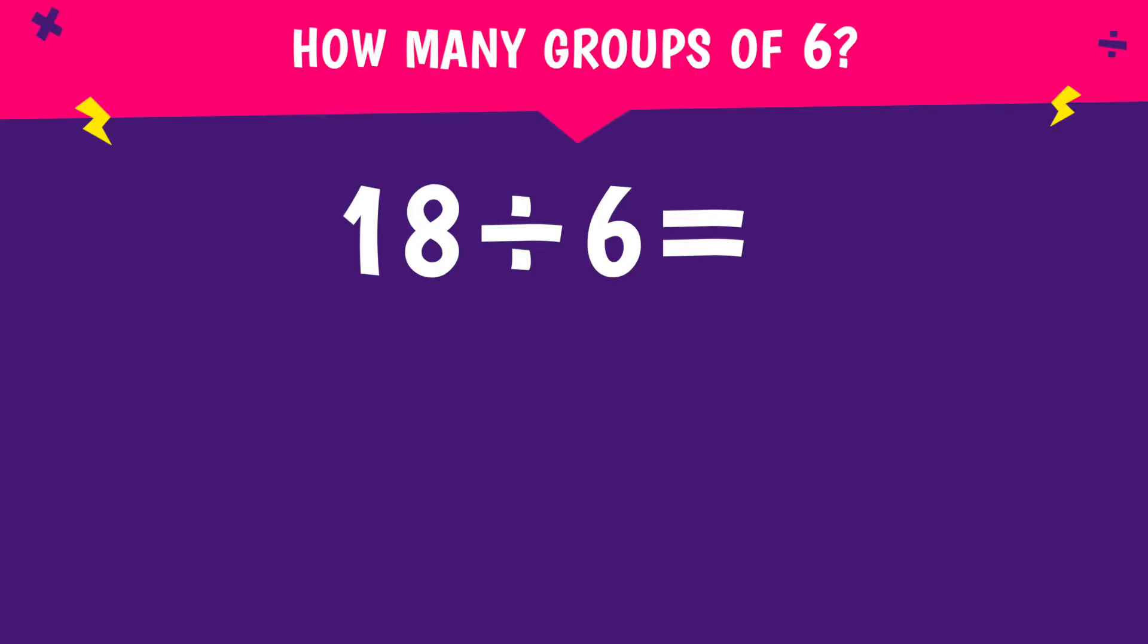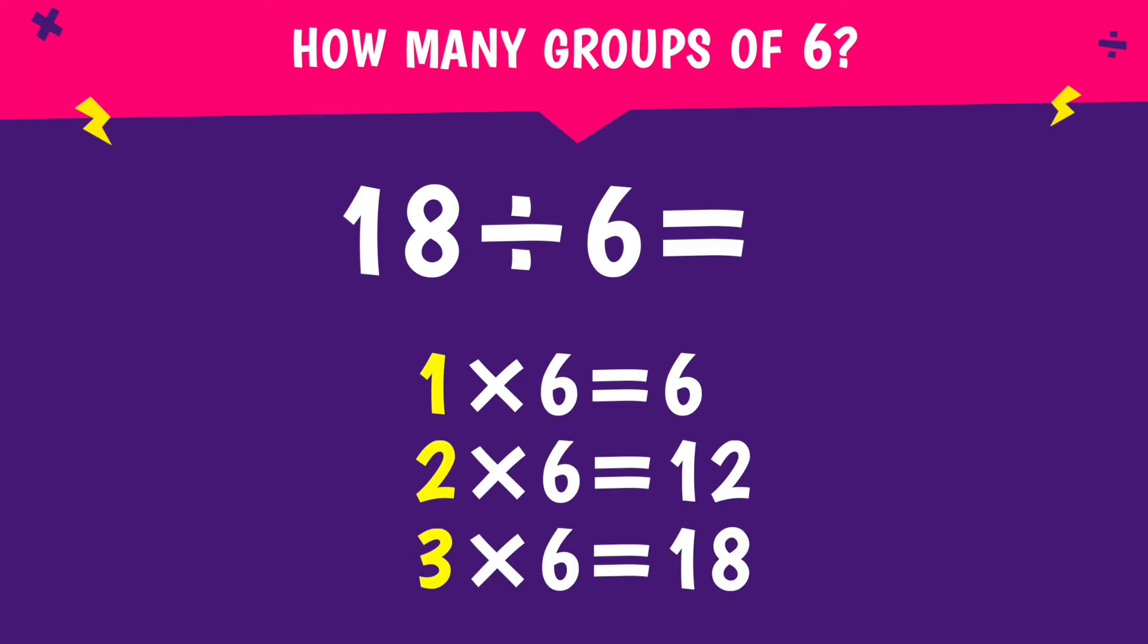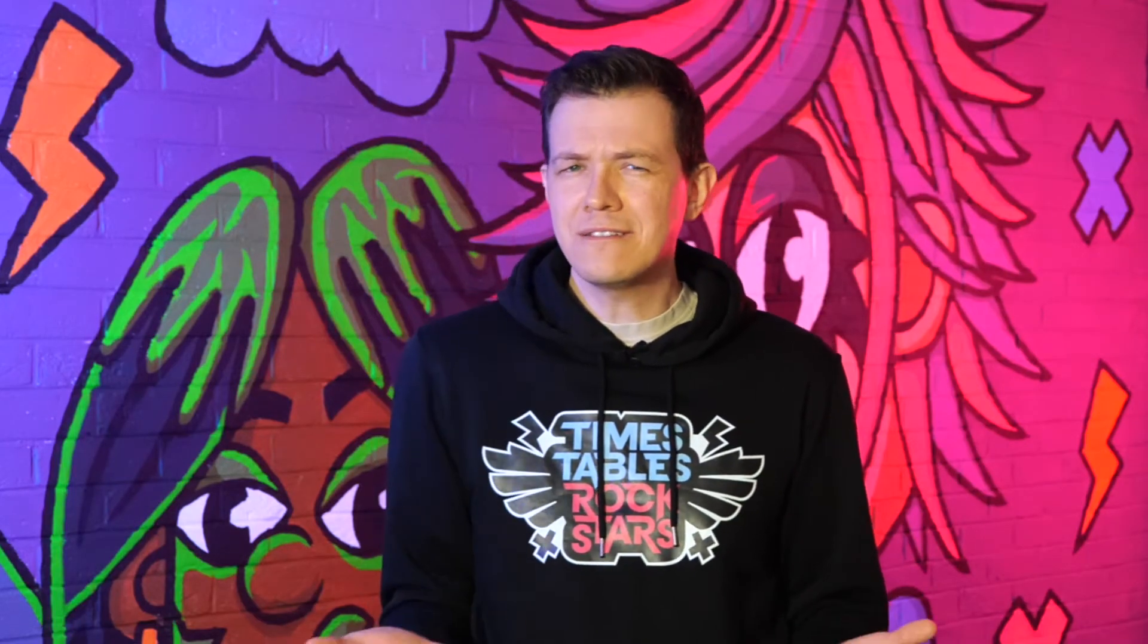Let's apply that to a new question: 18 divided by six. It's asking us how many groups of six are in 18. Let's check the six times table. One group of six is six, two groups of six are 12, three groups of six is 18. So there are three groups of six in 18. So 18 divided by six is three. If I know the times table fact, I don't have to do any working out to solve the division question.